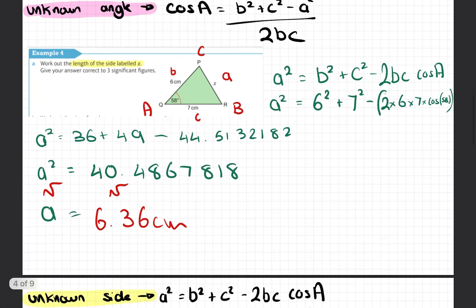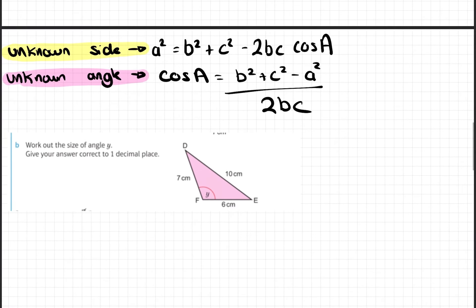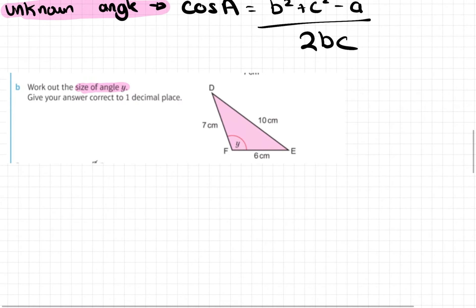Here we are, new question, unknown angle. We have the size of angle Y, we don't know it, so we're using the unknown angle rule. It's cos A we're using, so we are going to say that our unknown angle is angle A. Always use A, B, and C, it just makes your life easier. That can be B and you can be C.